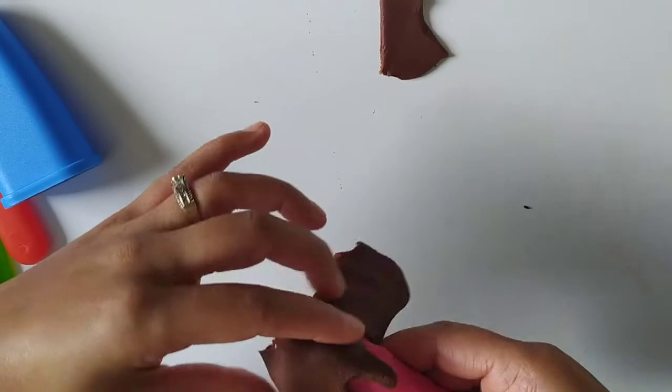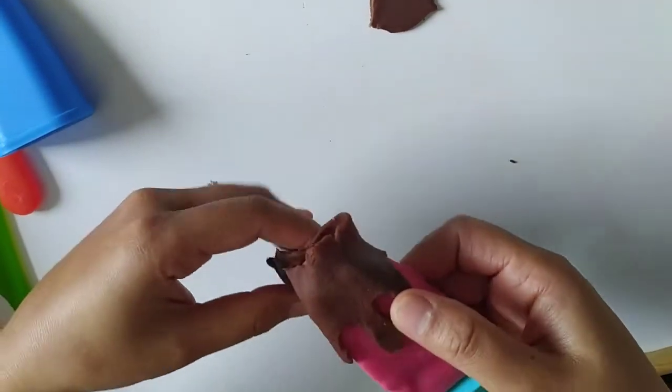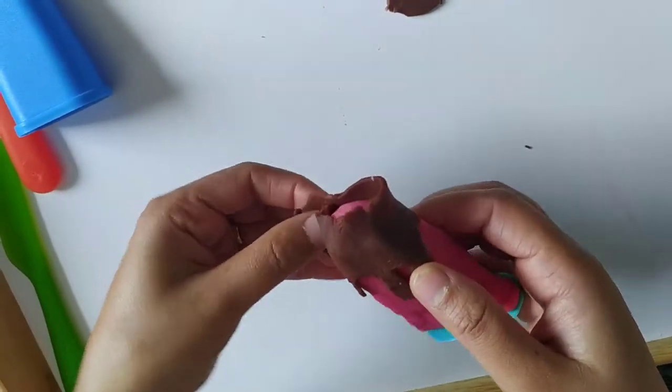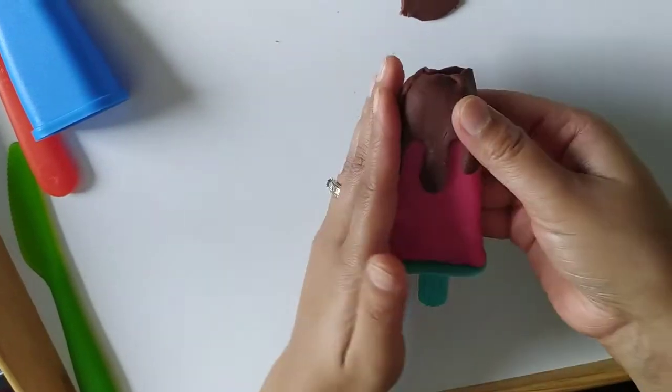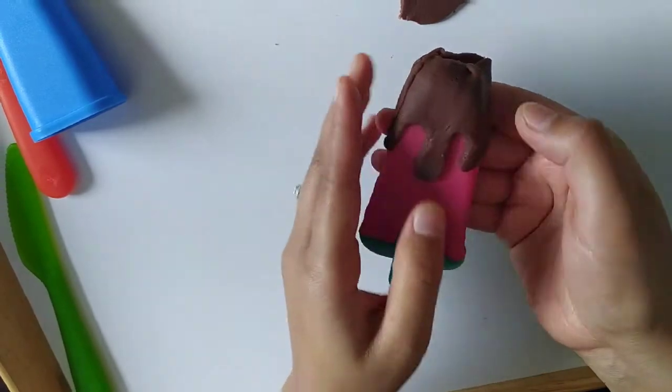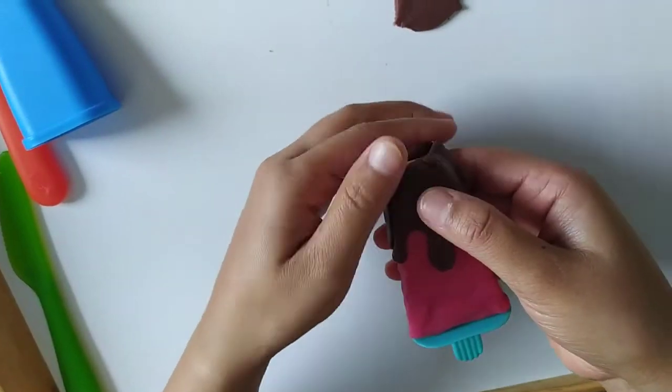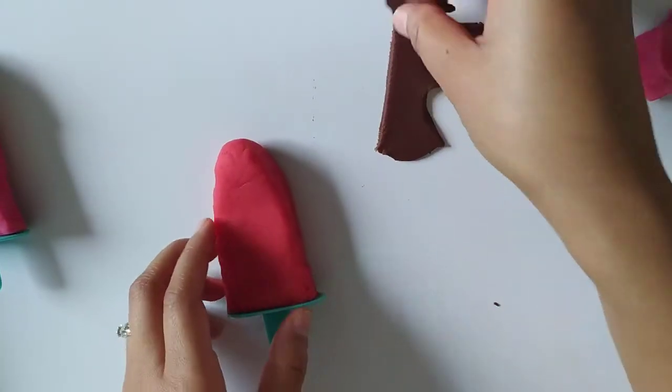Now let's wrap it around my popsicle. I'll start with the strawberry one. Oh, so much chocolate! Let's wrap it. Look how pretty it's looking.